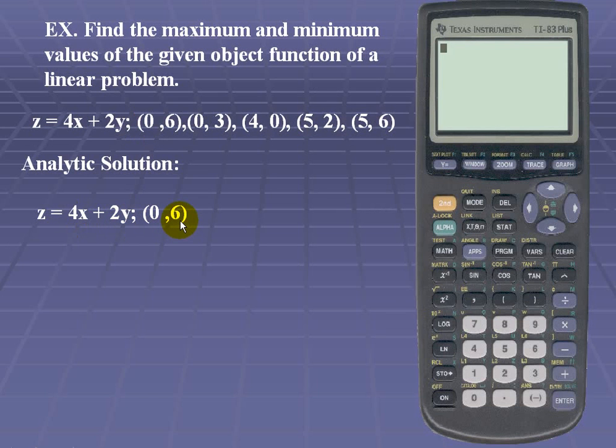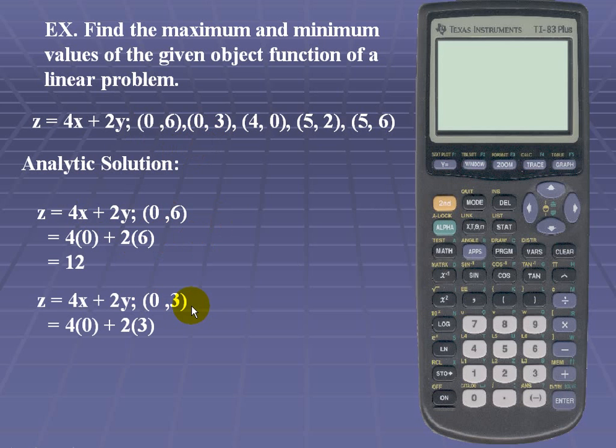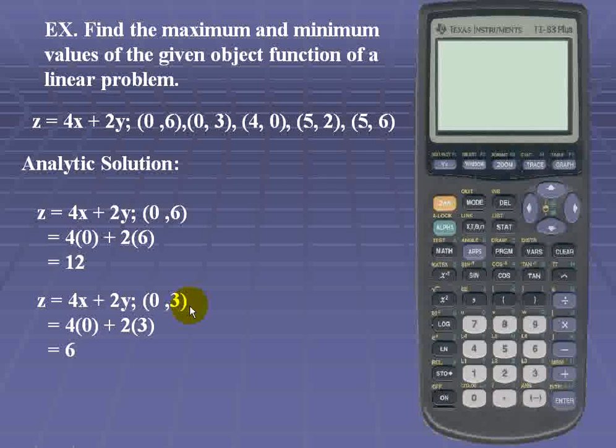So for our first ordered pair, we substitute x for 0 and y for 6. We get 12. We'll substitute in the next ordered pair, x for 0 and y for 3. We get 6.